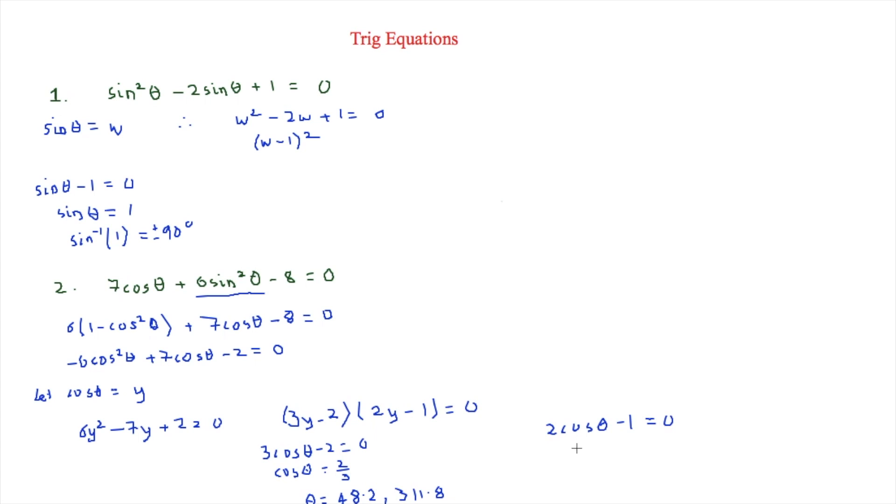Therefore, cos theta is equal to 0.5. Therefore, theta is equal to 60. And then 360 minus 60 is equal to 300.